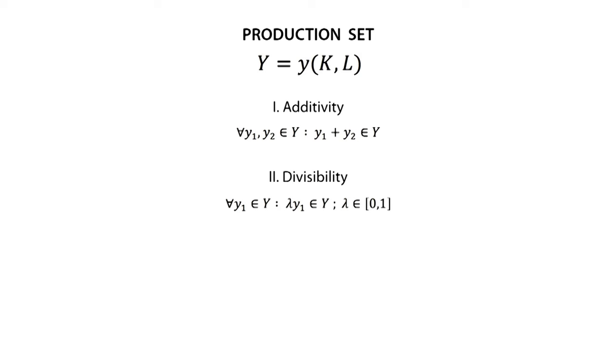Similarly, divisibility says that if a firm can produce an output equal to Y1, then it will also be able to produce any fraction of it. In other words, if Y1 is an element of the production set Y, and lambda is between 0 and 1, then lambda Y1 is also an element of Y.